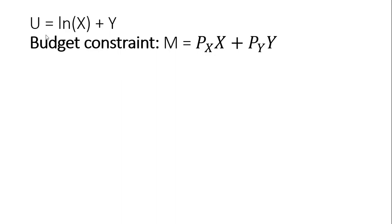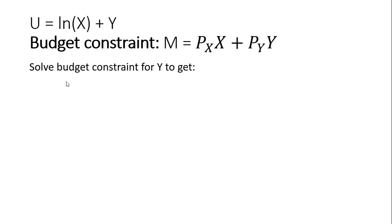So here's our consumer's quasi-linear utility function. The budget constraint: m is income, price of good x, price of good y, x is units of good x, y is units of good y. So we are first going to solve for the budget constraint here.